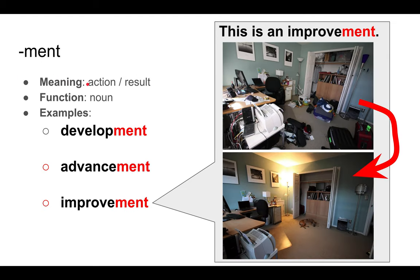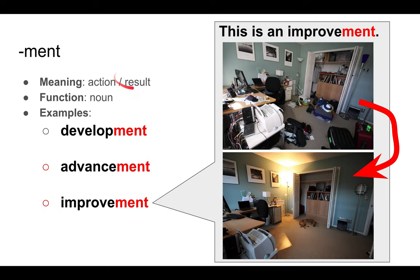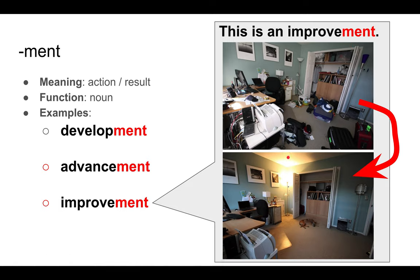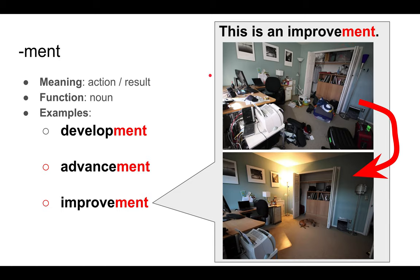Then we have -ment, and it represents an action — usually the result of an action — and it's a noun. So we have development — the result of developing something. Advancement — the result of advancing. And improvement — the result of improving something. The meaning is an action with the implied meaning of result. For example, look at this room — it's filthy and messy. The man who owns this room cleaned it. Well, this is an improvement. The result of cleaning the room is an improvement.